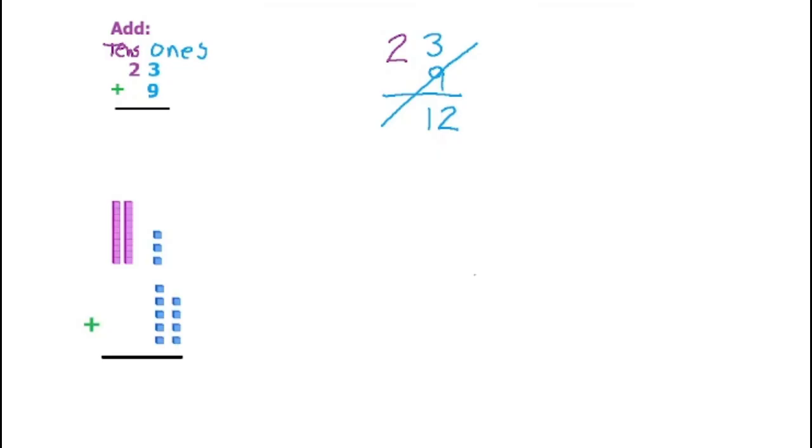So how would you do that using blocks? This is how this equation looks with blocks. So we have 2 tens here, so 20, and then this is 3 ones, so this is 23, and this is 9 ones for the 9. So we're adding 23 plus 9.